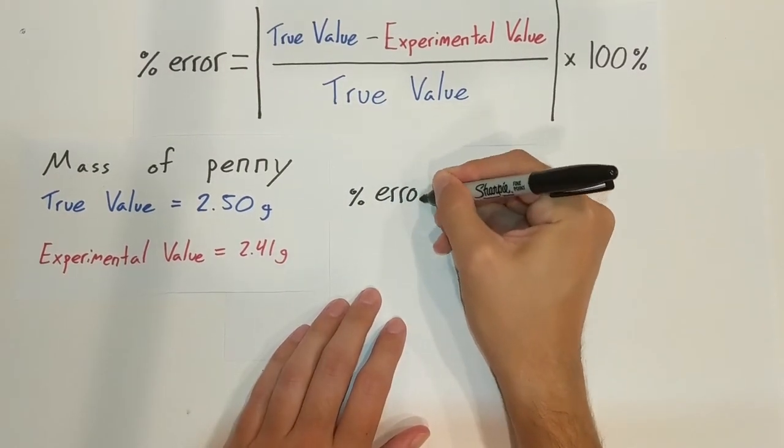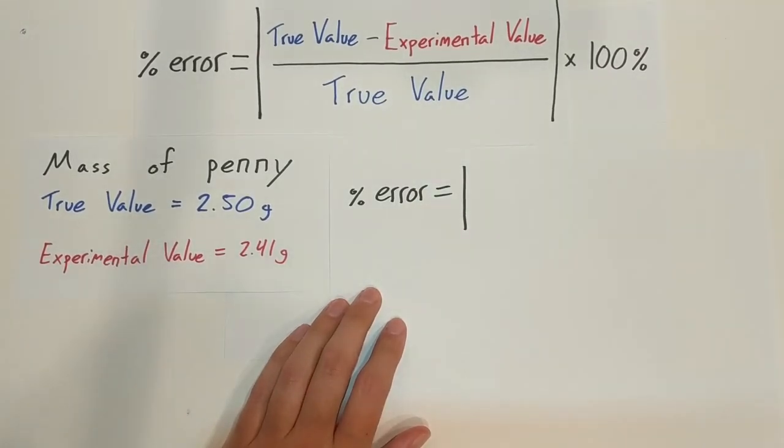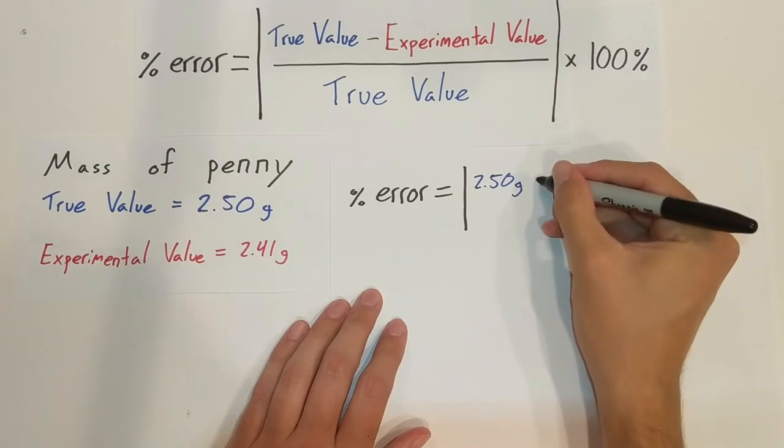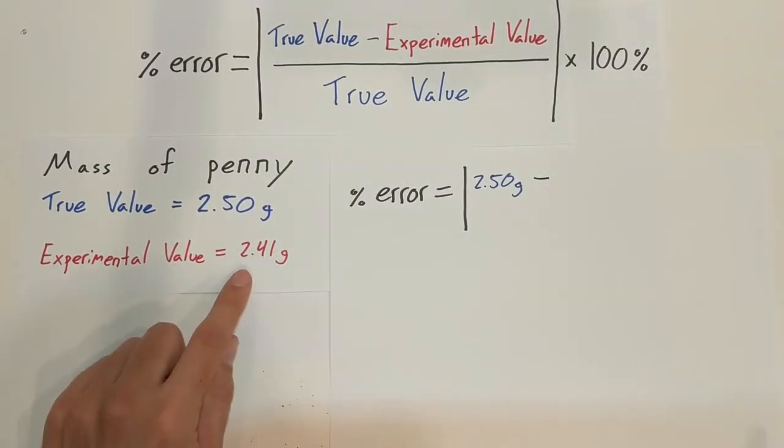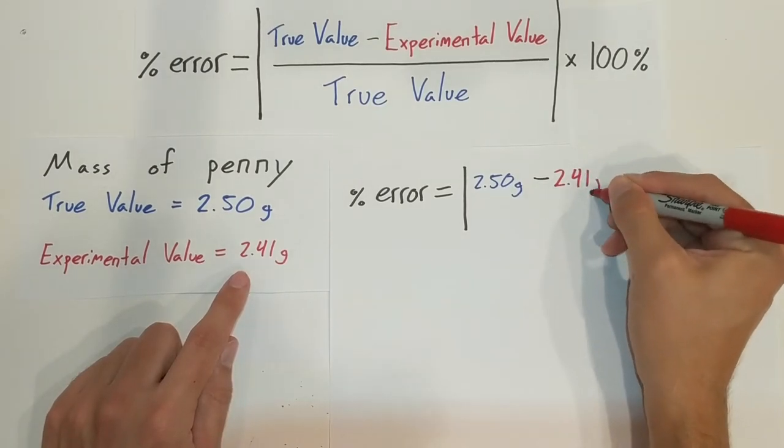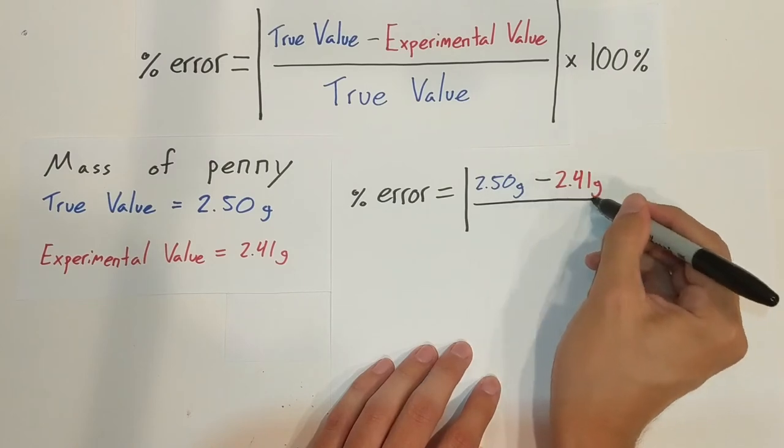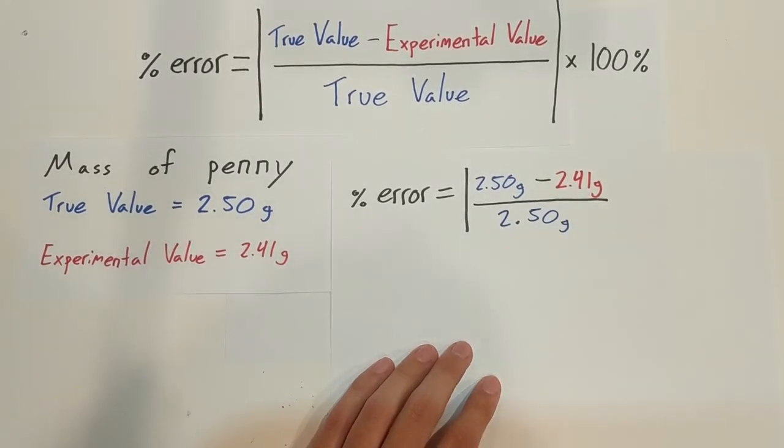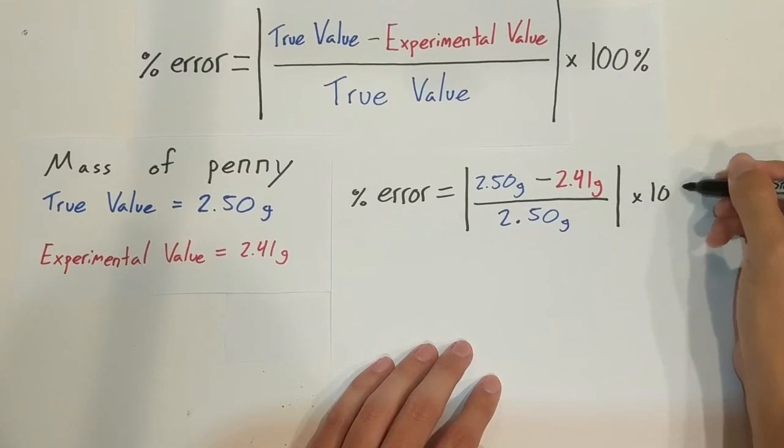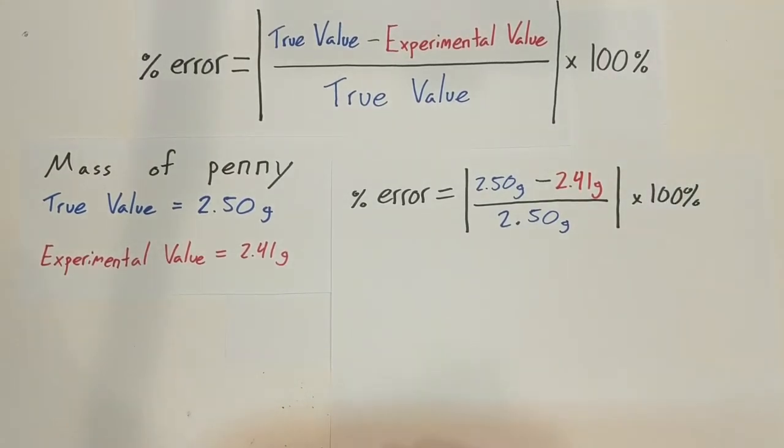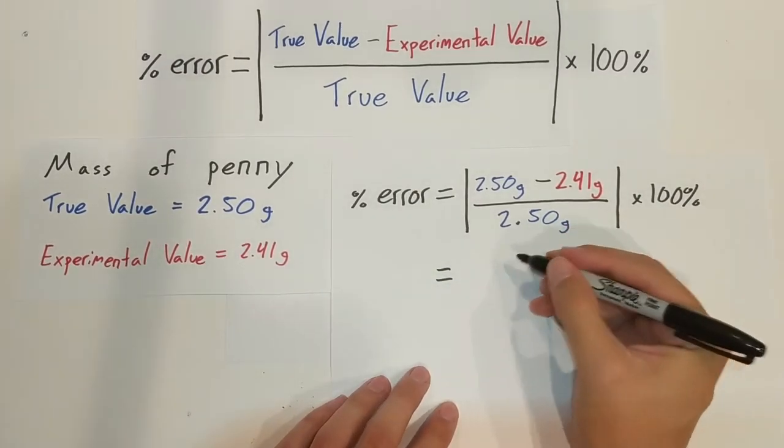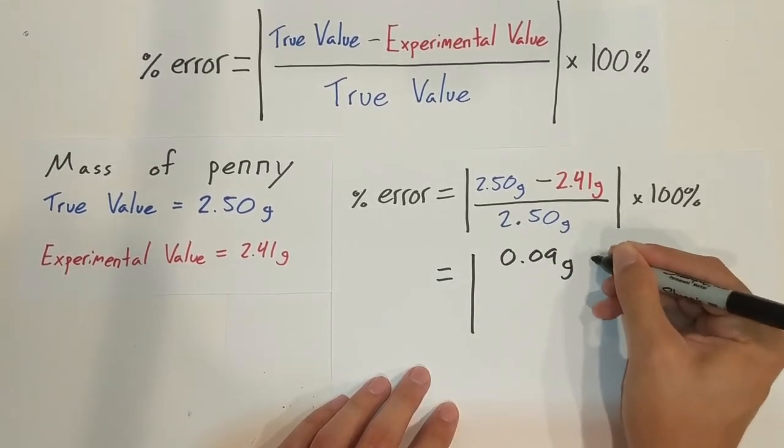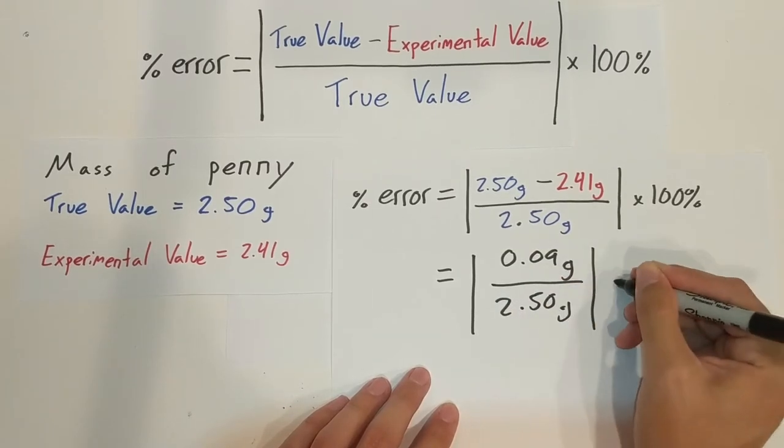And when we find the percent error, it's going to be exactly the same way. So our percent error is going to equal absolute value, and our true value of 2.50 grams minus our experimental value. So on a mechanical scale, I found it was only 2.41 grams divided by the true value, 2.50 grams, times 100 percent. So if we do that math, we find that this is 0.09 grams divided by 2.50 grams times 100 percent.